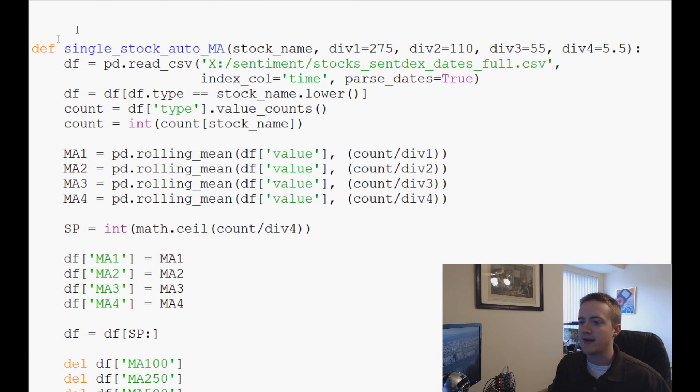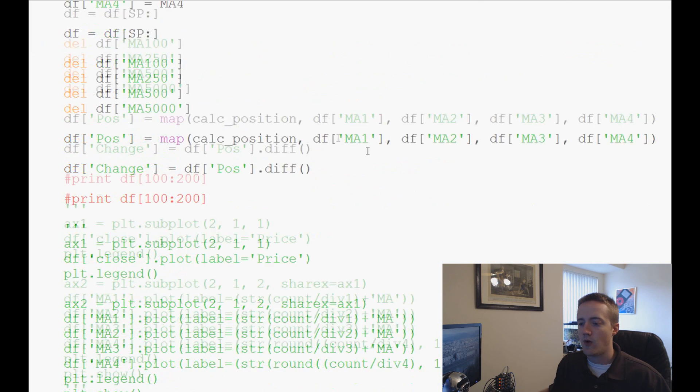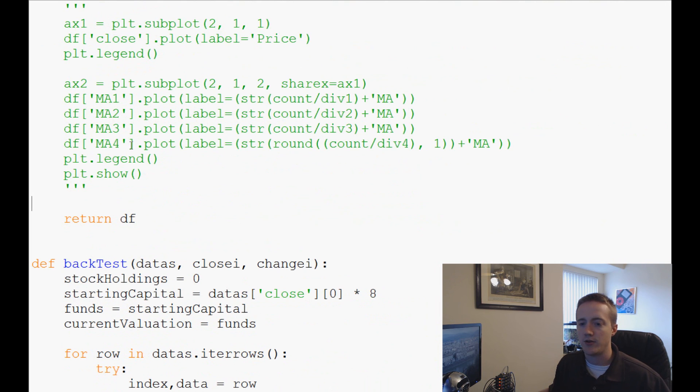Now there's one more thing I want to add and that's going to be we have to change something in the single stock auto MA and what we have to change is right at the end here what we want to do is we want to have it before we return data frame we want to do df.sort_index and then in place equals true.